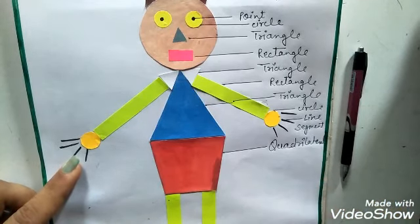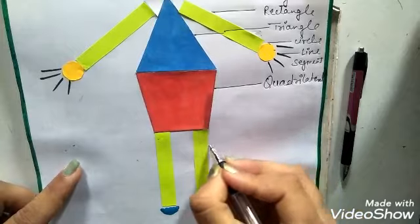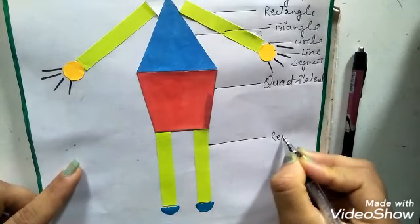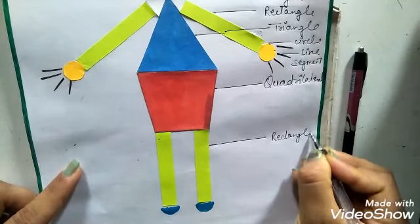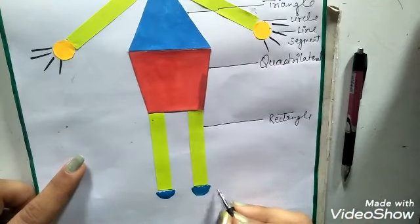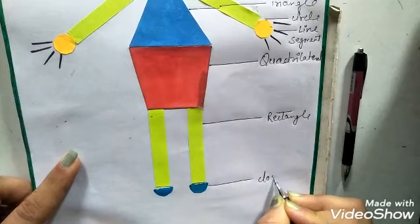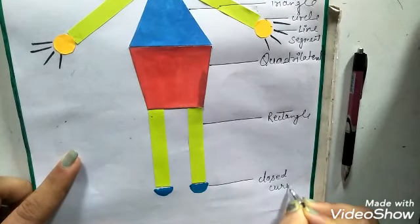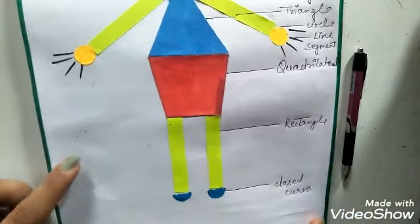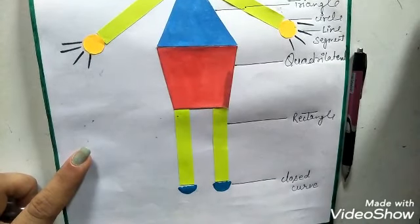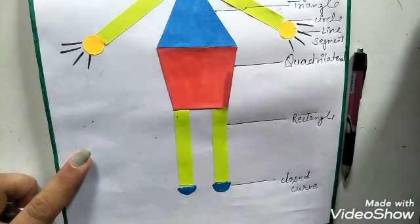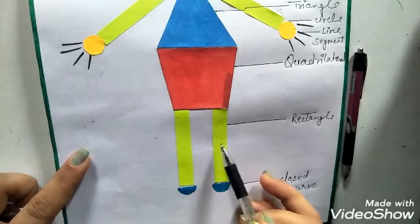Quadrilateral. Then rectangle, closed curve. And you can say this is pair of parallel lines.